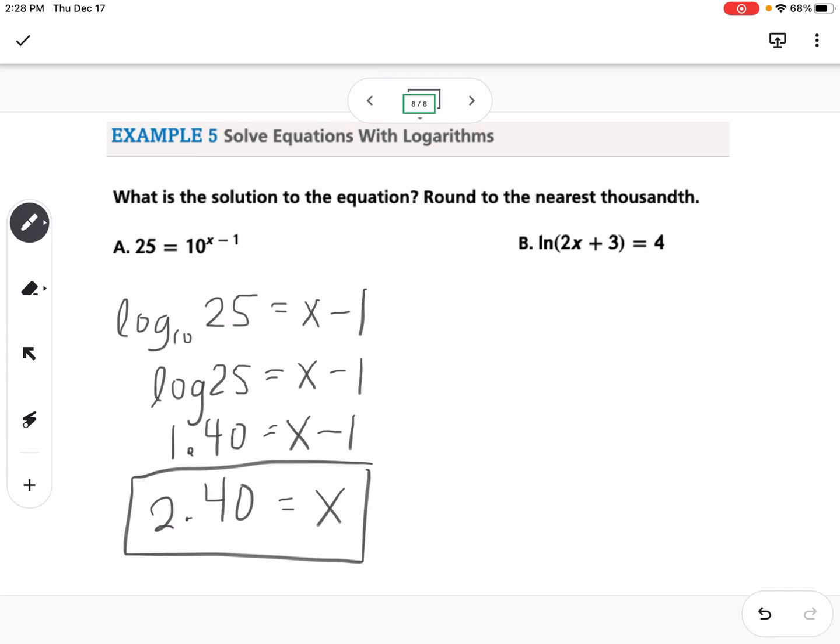And then our last example here, we're going to switch the form. So natural log is log base E, so it would be E to the fourth power equals 2X plus 3. We can type E to the fourth power into our calculator as well, so we get 54.6 equals 2X plus 3. Subtract 3 from both sides, 51.6 equals 2X, divide by 2, and we get 25.8 equals X.